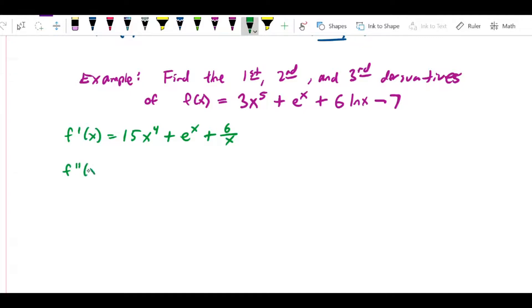f''(x) is just going to be the derivative of f'. The derivative of 15x^4 is 4 times 15, which is 60x^3, then e^x is its own derivative again. And recall that 6/x is equal to 6x^(-1), so the derivative of that is -1 times 6, or -6x^(-2).